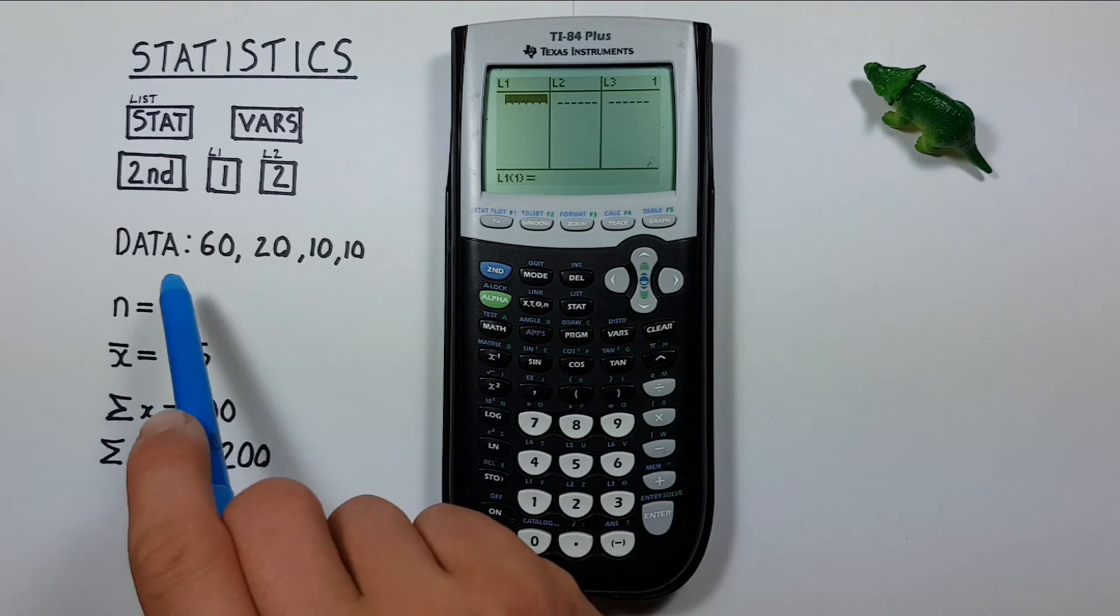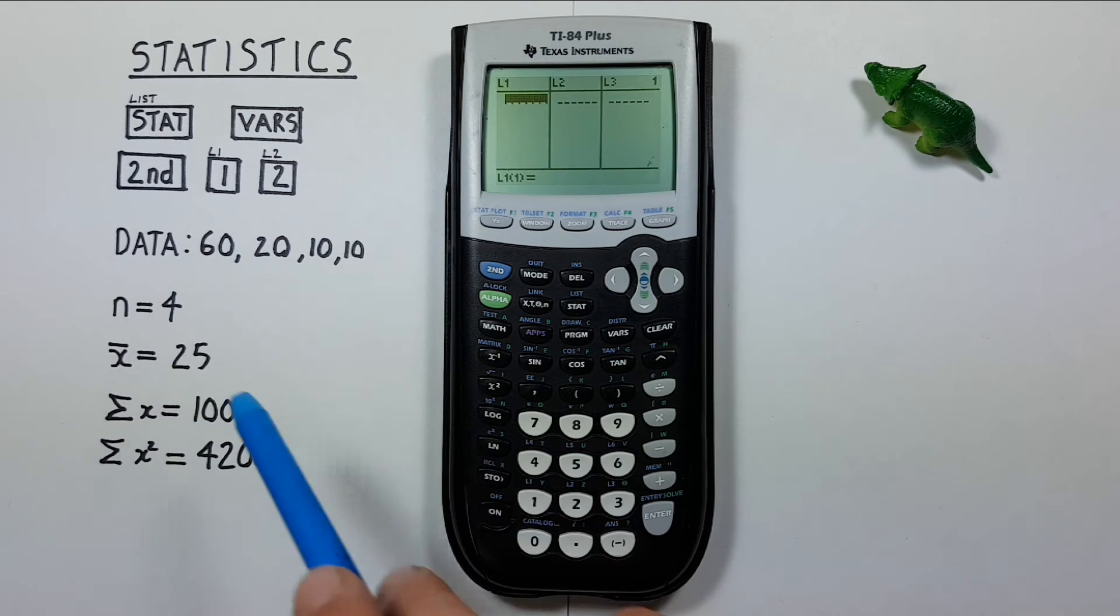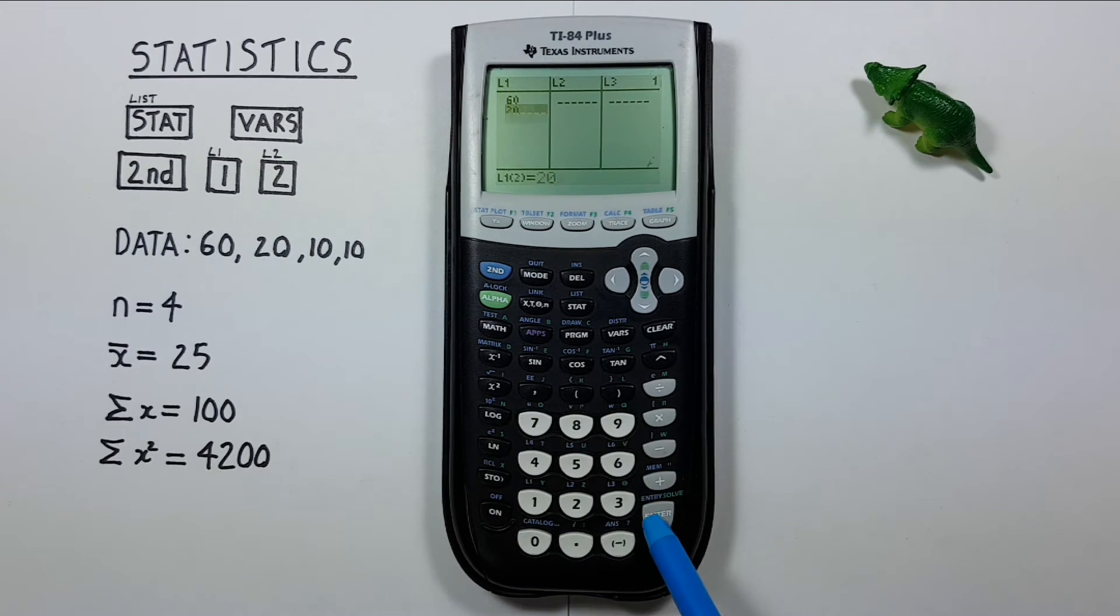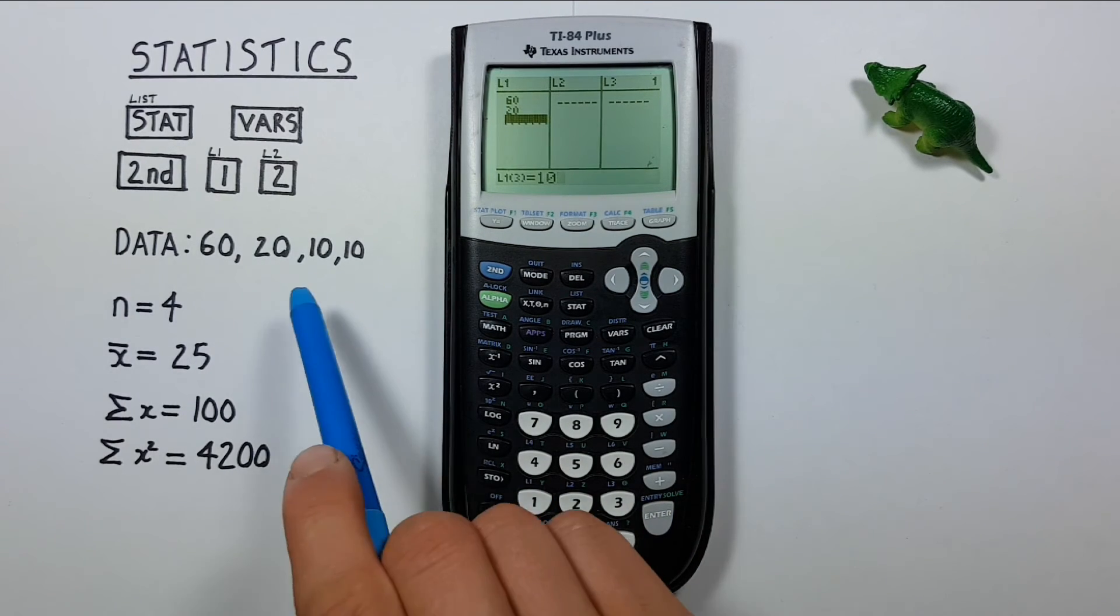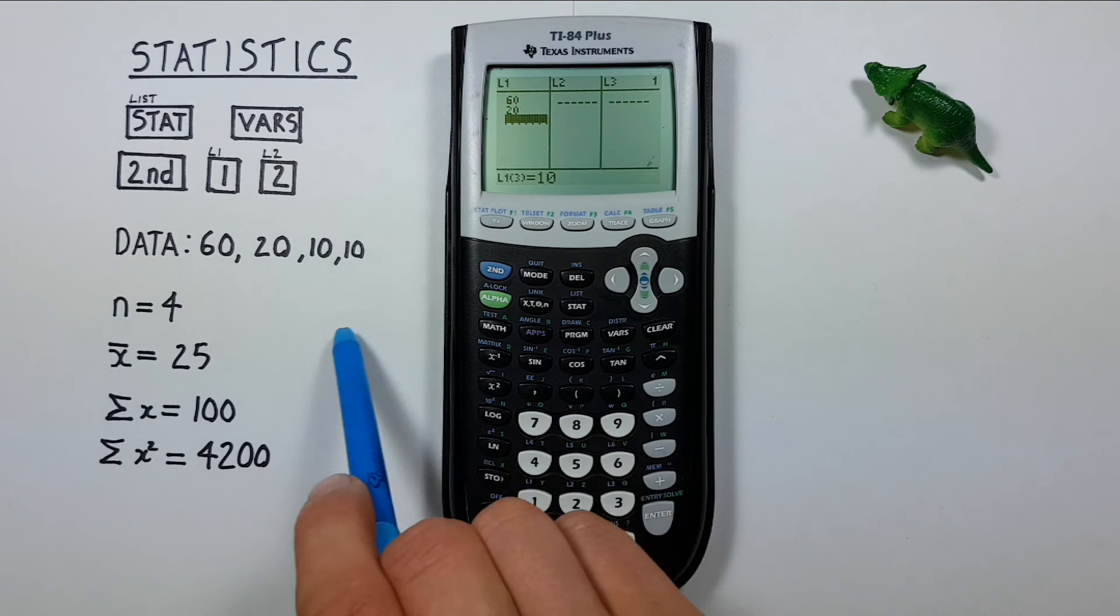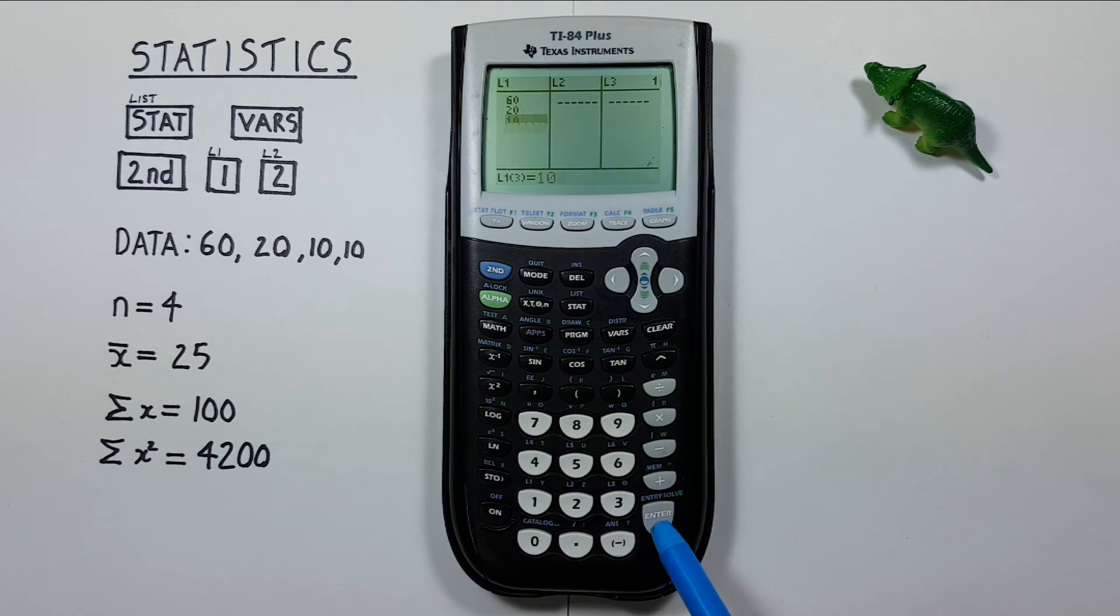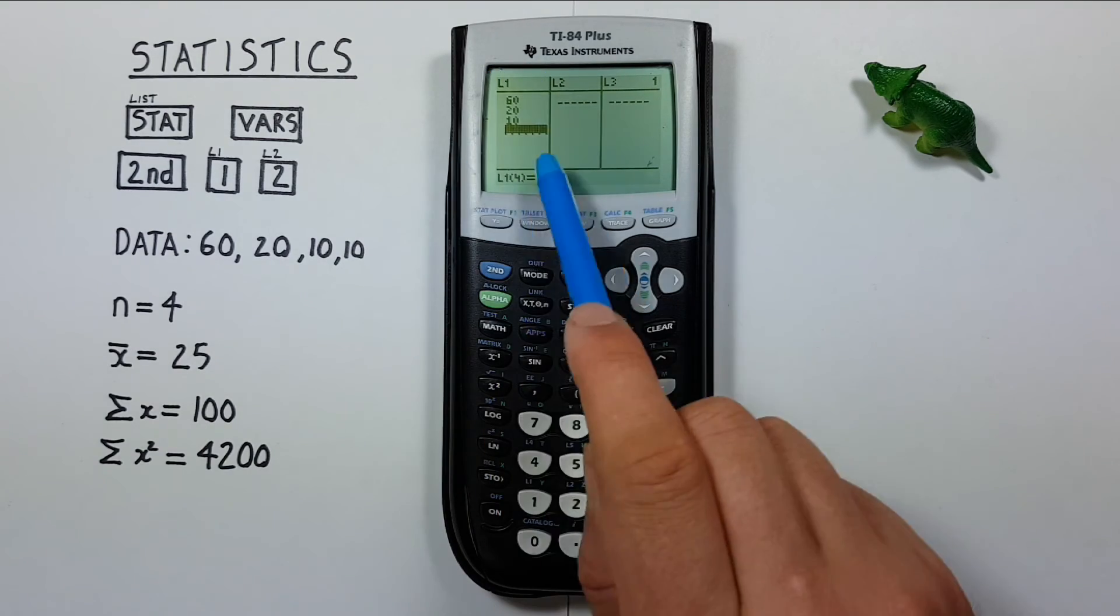If we clear this out, we can start by entering the individual pieces of data. So for example, we have 60, 20, and 10. Now we have two tens in here, but we only want to enter it in once. And we can do that. We have each unique piece of data entered.